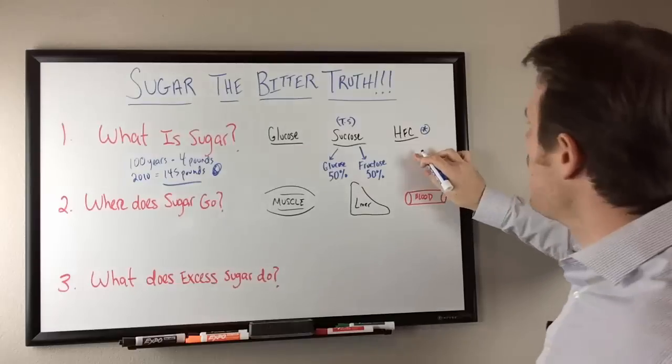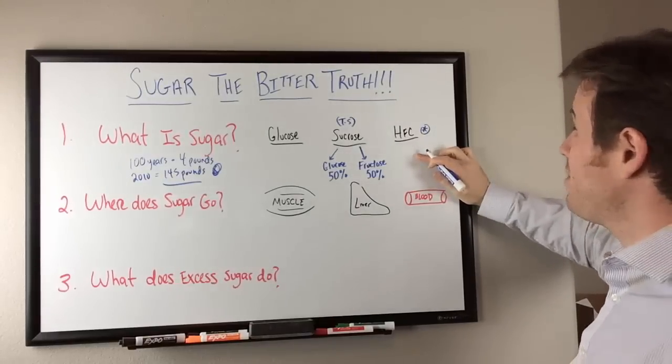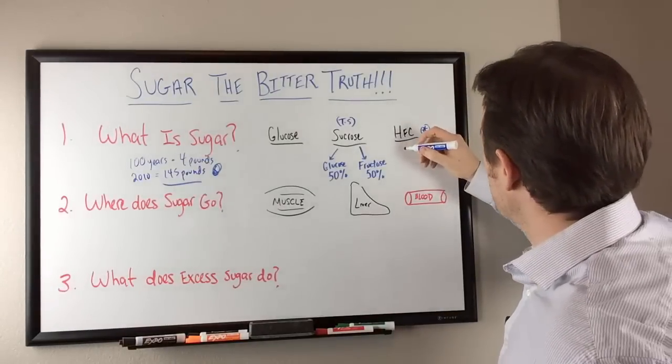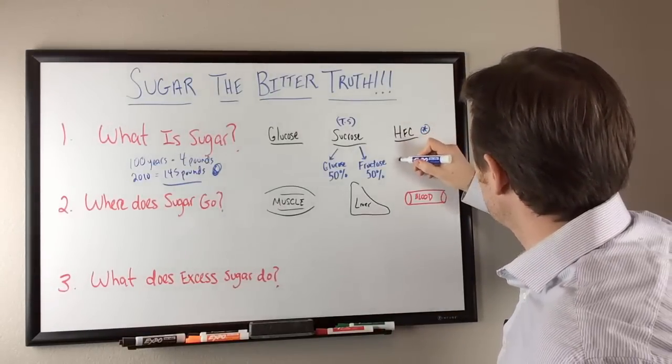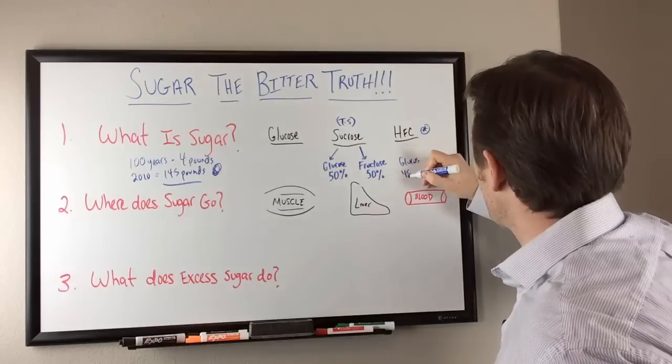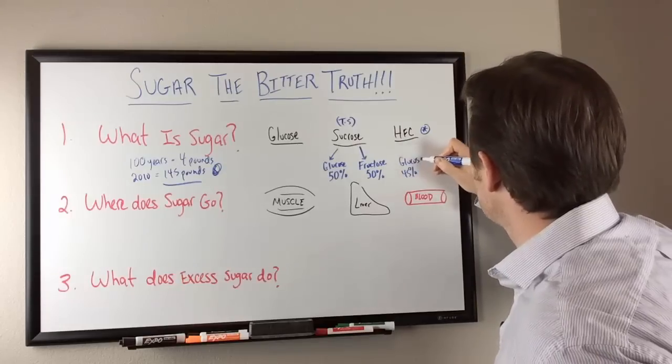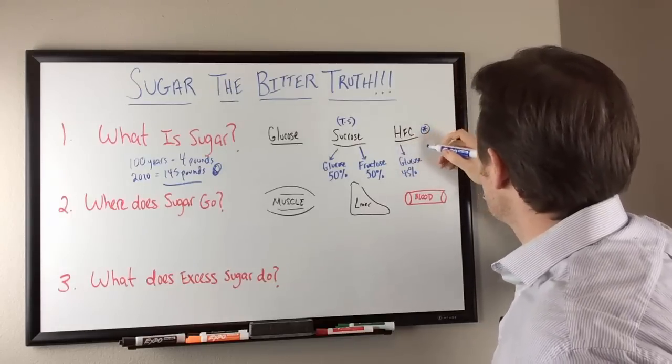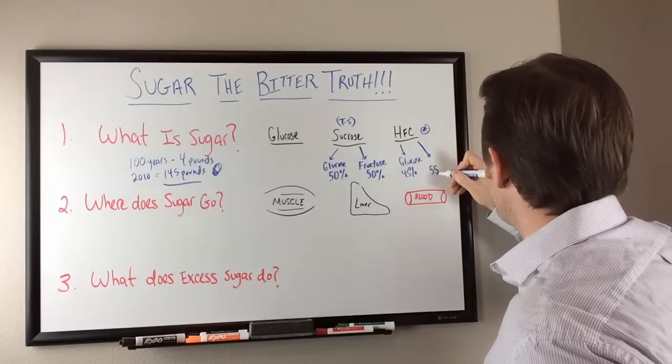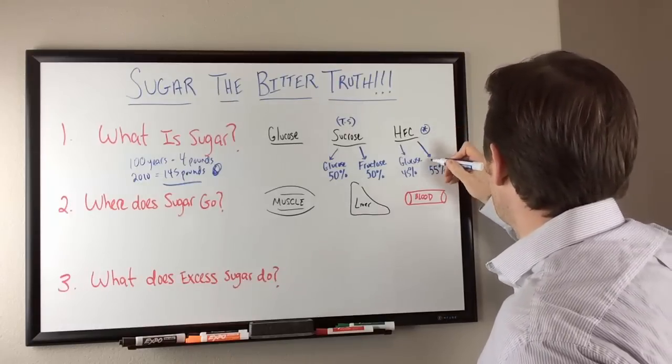And then we have high fructose corn syrup, which is almost the same thing. The only difference is the glucose is about 45% and the fructose part you're going to see is 55%. So slight bit higher, more fructose.